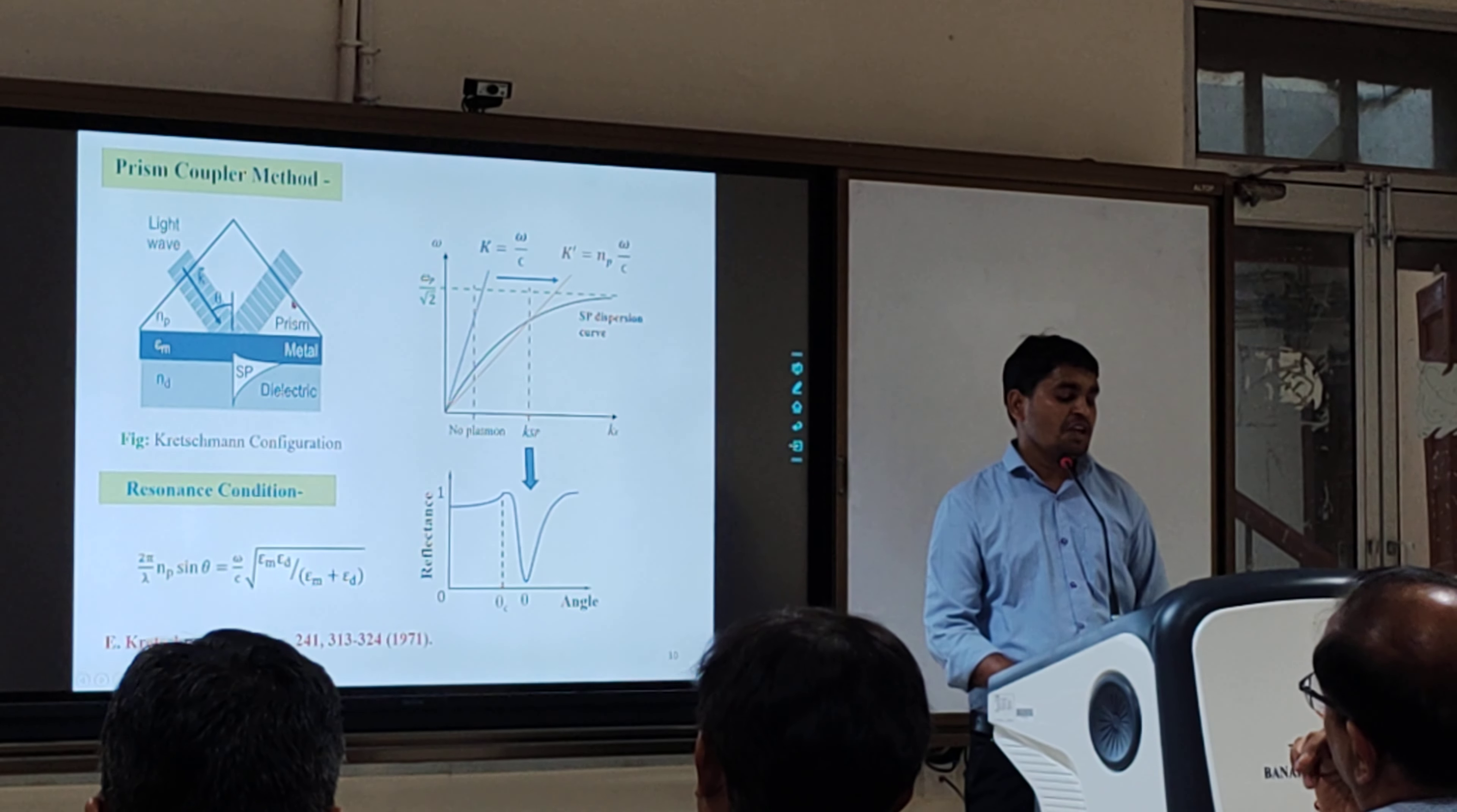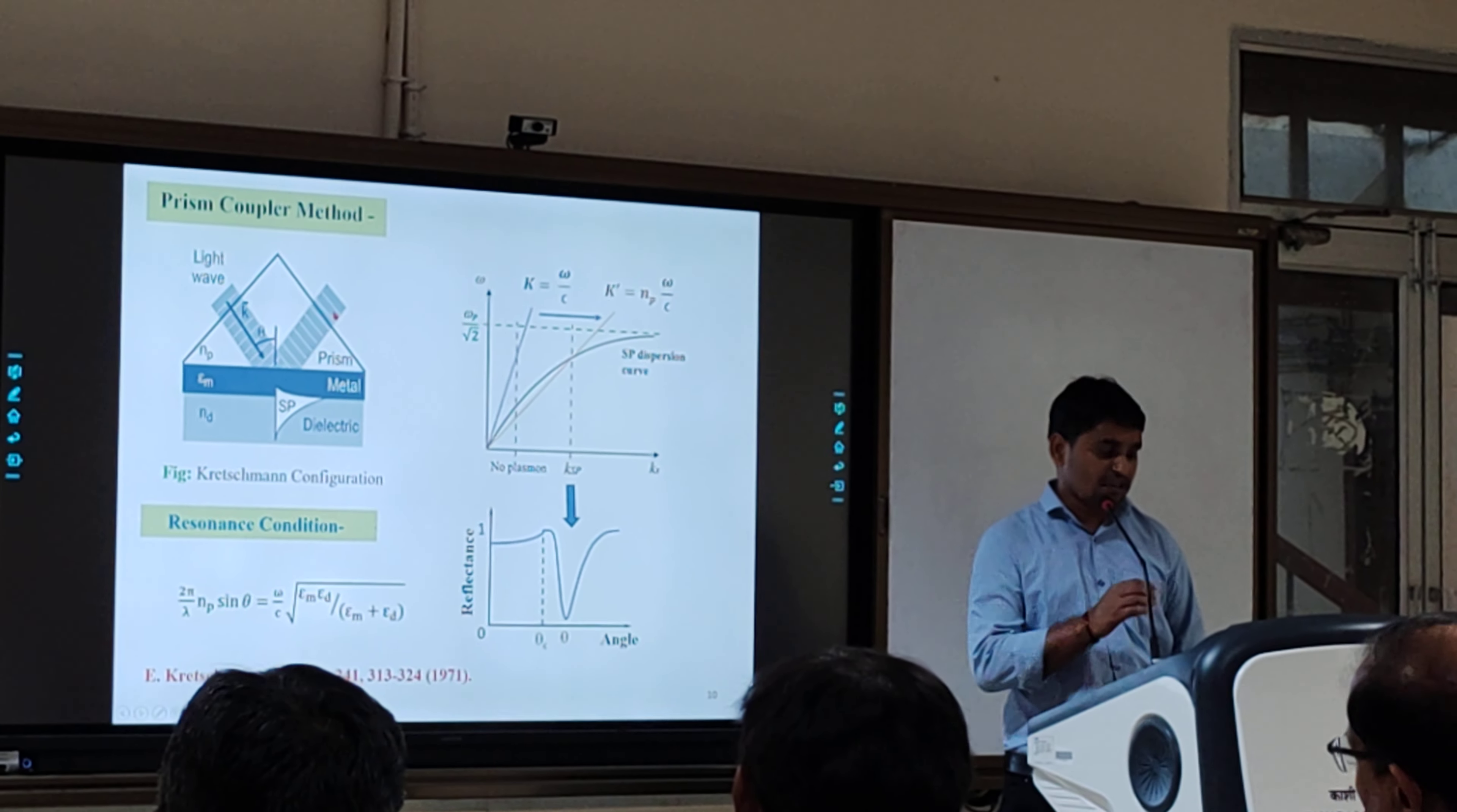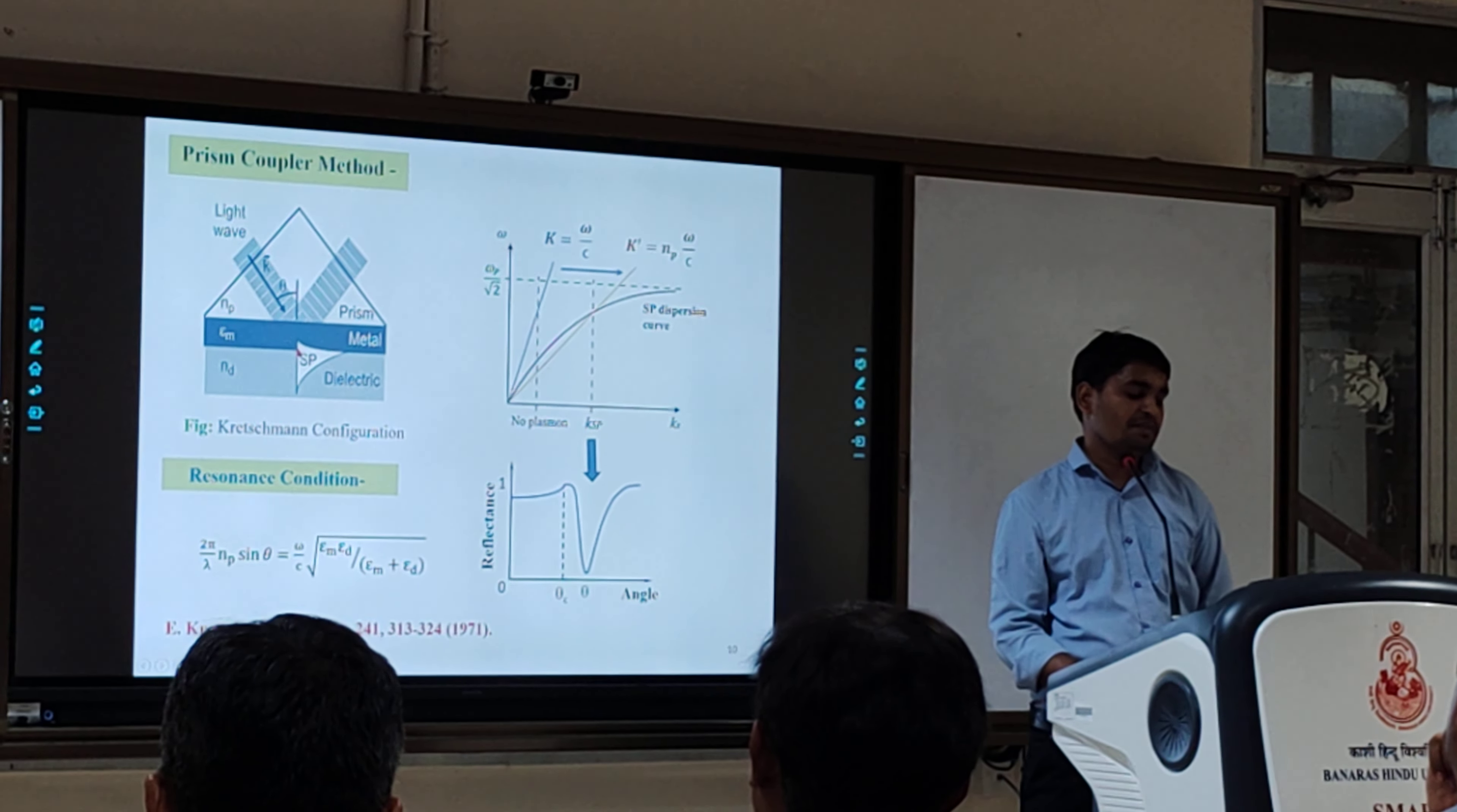In the Kretschmann configuration, we use a high refractive index prism to provide the extra momentum to the incident light, so that surface plasmons can be coupled at the metal-dielectric interface.